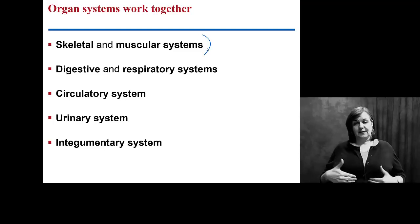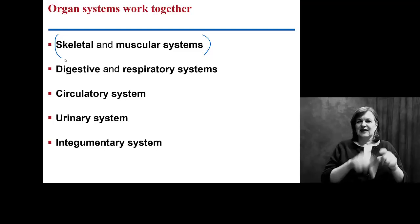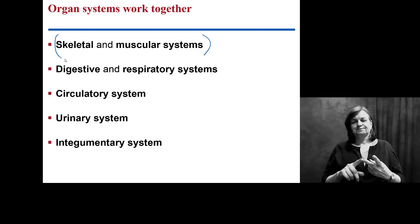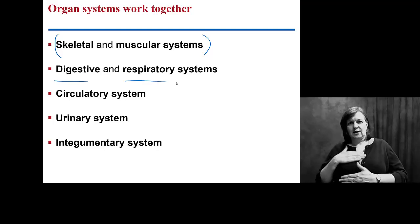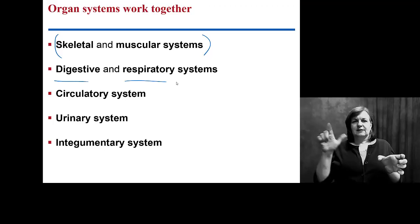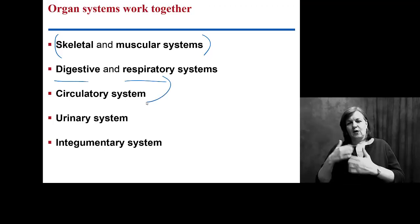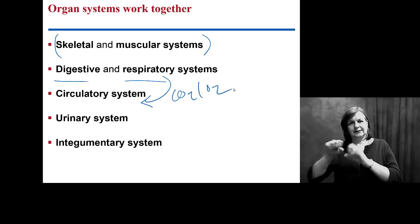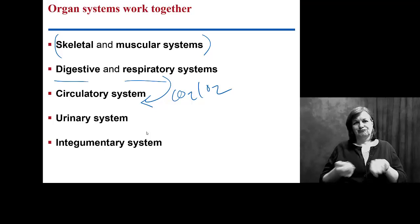The skeletal and muscular systems could be considered separate, but we often put them together because your skeleton is not going to move without your muscular system. Digestive and respiratory we often put together, though we'll talk about them separately, and we'll tie your respiratory system into your circulatory system for gas exchange. Your urinary system, of course, deals with waste removal and so on.